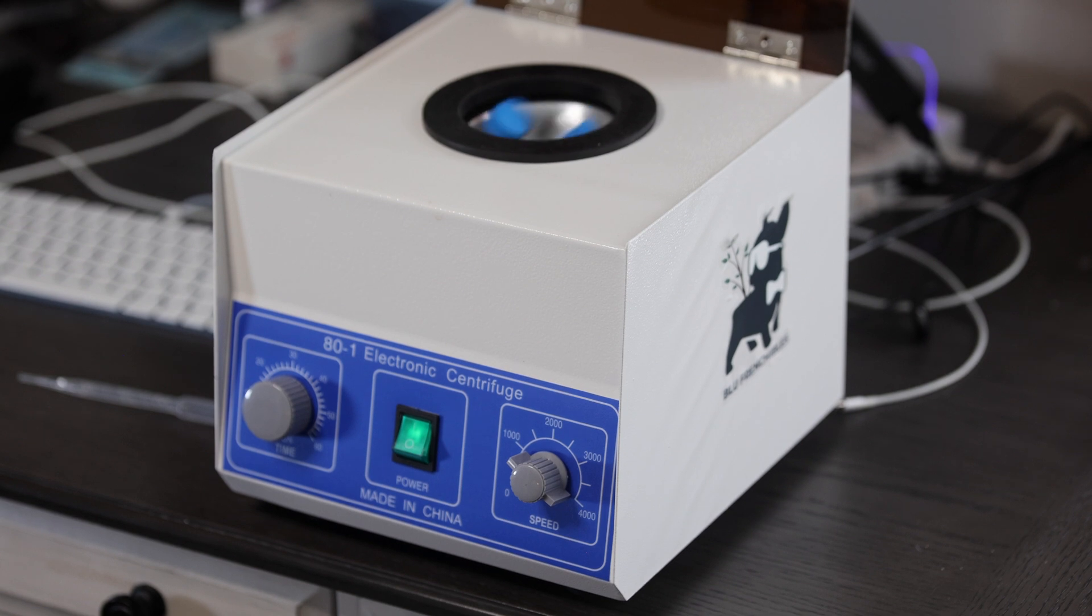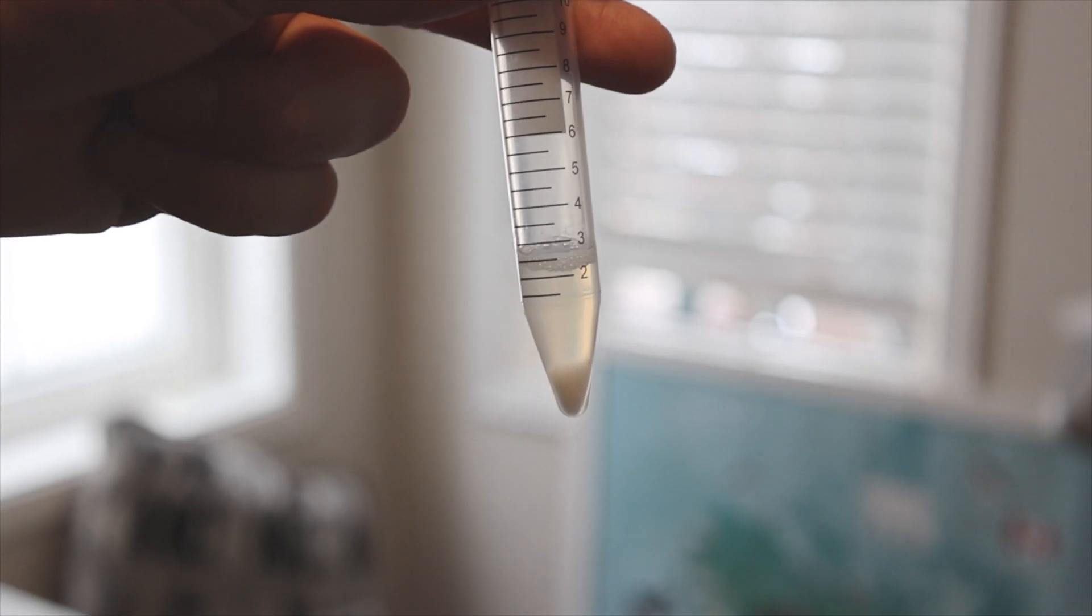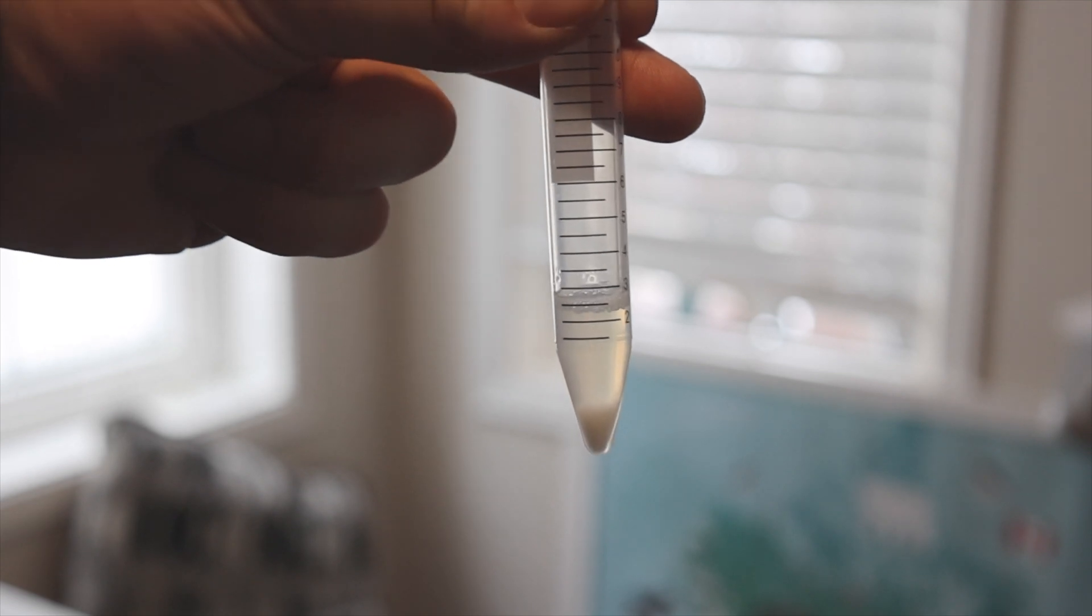The centrifuge is going to separate the seminal fluid and the sperm, moving the seminal fluid to the top and the sperm to the bottom.